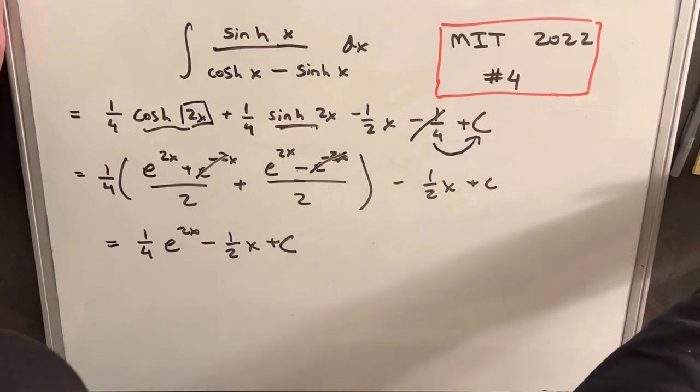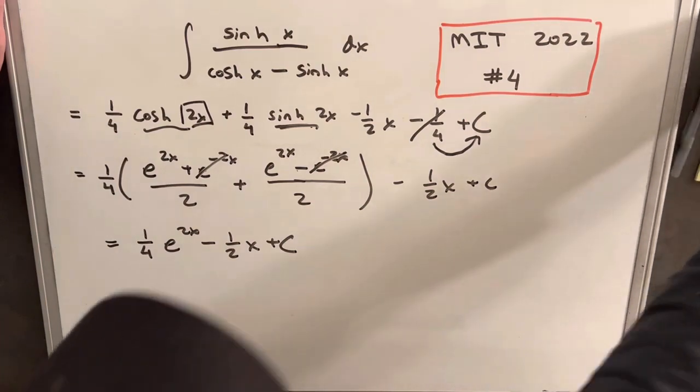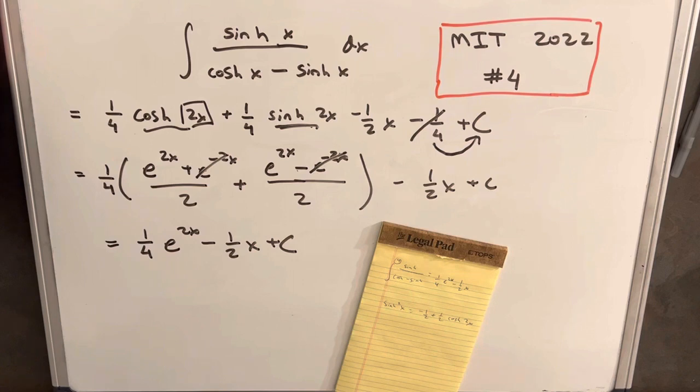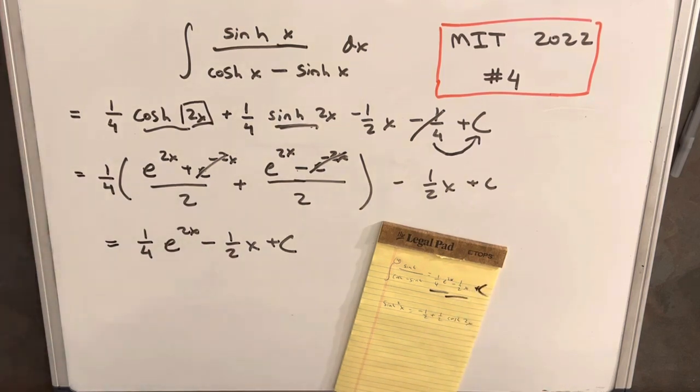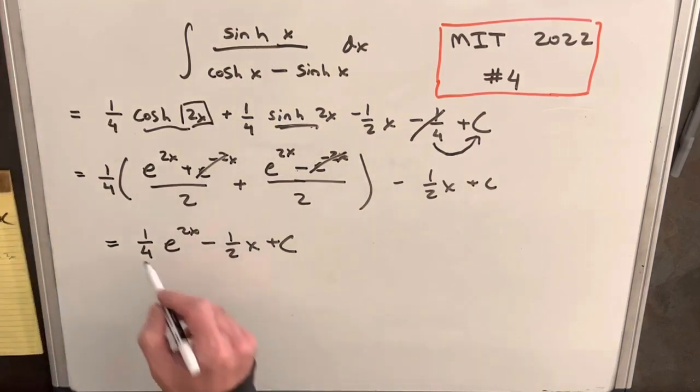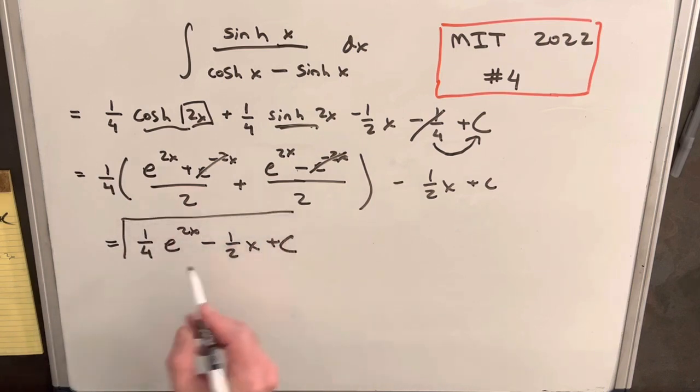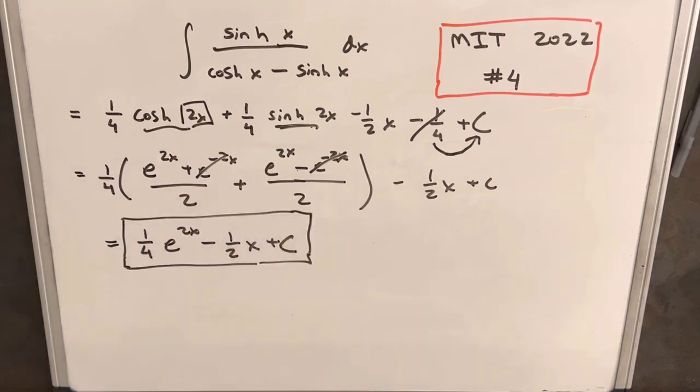Let me check my answer. There's a lot of algebra going on there. Yes, 1 fourth e to the 2x minus 1 half x. Oh, I forgot the plus c. That's it. So got an answer. MIT integration B 2022. So good problem. I'll stop it there.